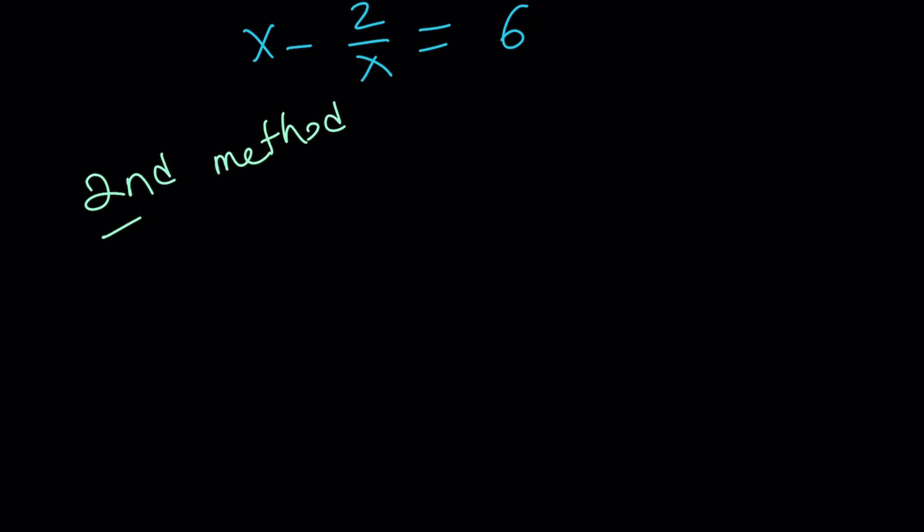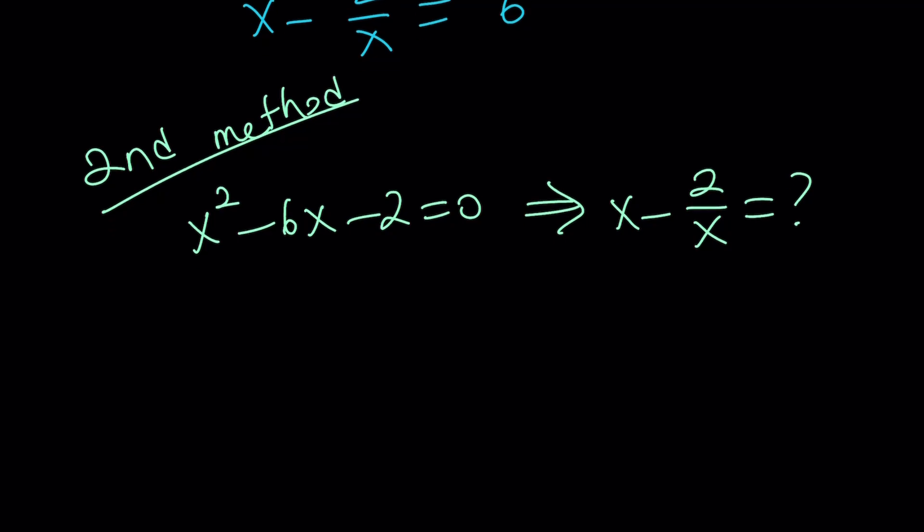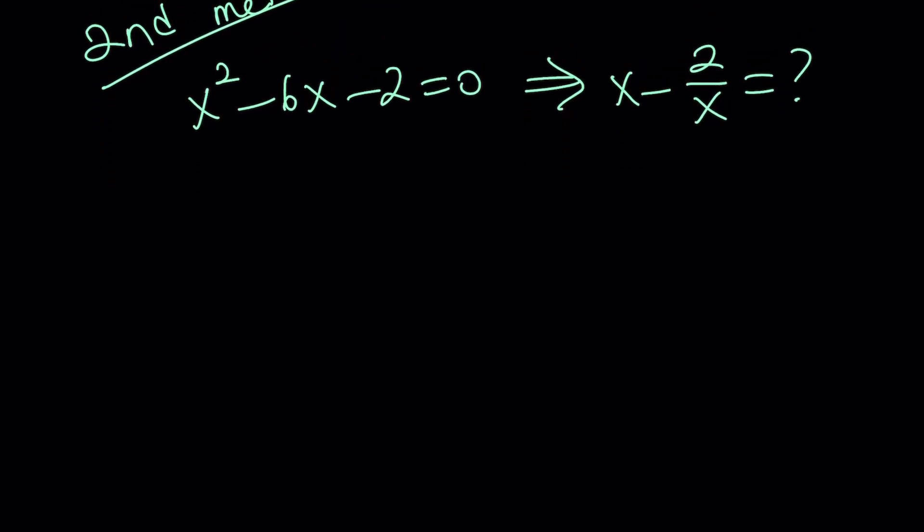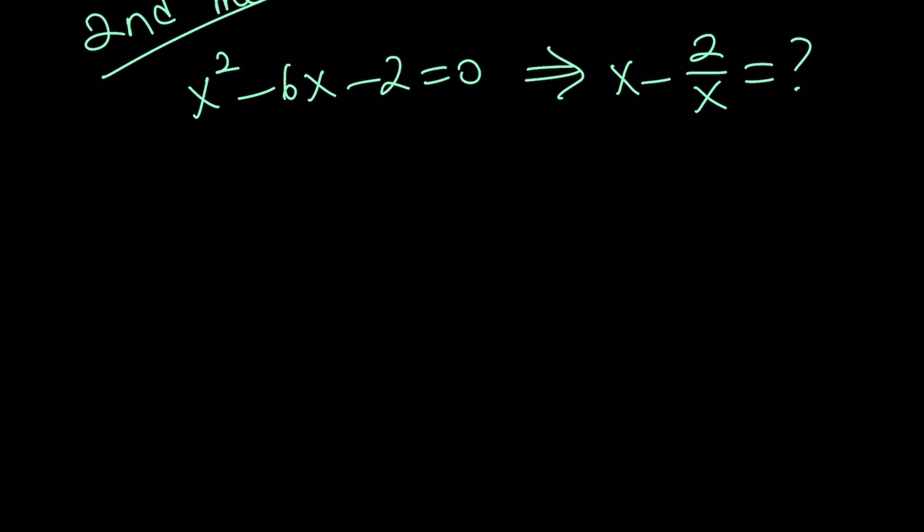So remember, the original problem was given as x squared minus 6x minus 2 equals 0, and we're supposed to find x minus 2 over x. We're supposed to evaluate it, so we will find the numerical value. You already know the answer, but just pretend you haven't seen the first method. It's just a fresh start.